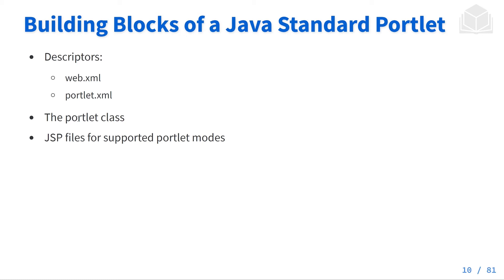When creating a Java standard portlet, there are a couple of very important files. The two key descriptor files are web.xml and portlet.xml — with portlet.xml being the one we're most interested in for Java standard portlets. We also have a portlet class, potentially a number of additional classes, and JSP files that are used to display content through the portlet. It's worth emphasizing this is a Java standard portlet — we're learning the basics and anatomy here. Once we move to the Liferay world, things shift a little, but the fundamentals remain.